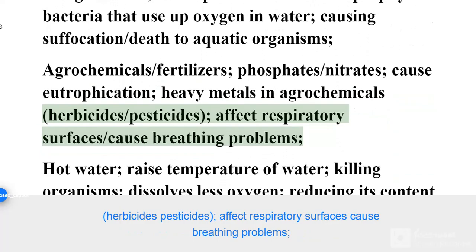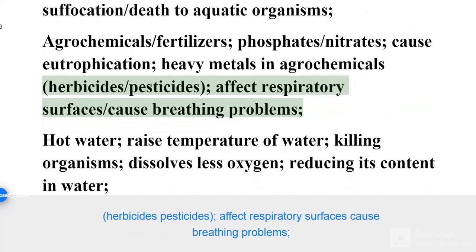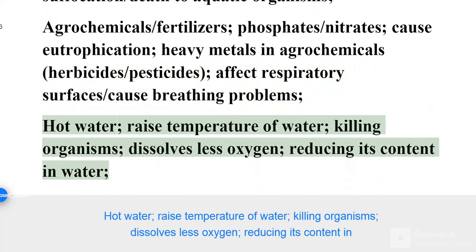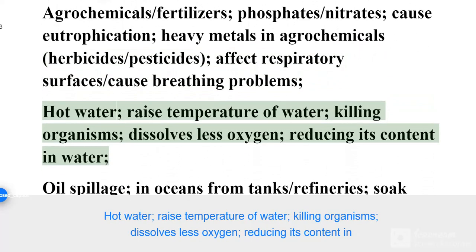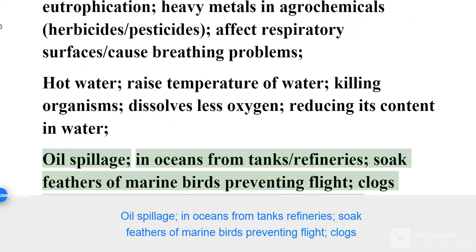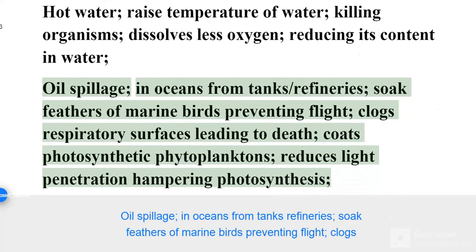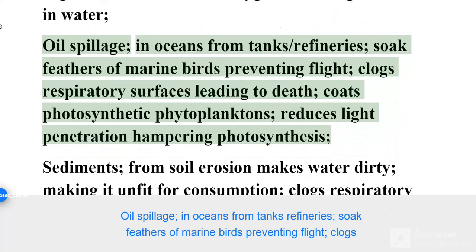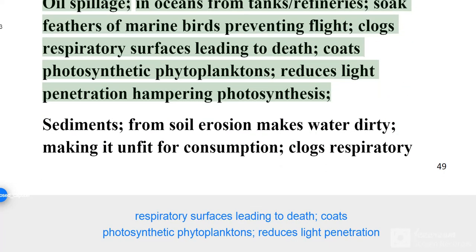Herbicides and pesticides affect respiratory surfaces and cause breathing problems. Hot water raises the temperature of water, killing organisms, and dissolves less oxygen, reducing its content in water. Oil spillage in oceans from tankers and refineries soaks feathers of marine birds preventing flight, and clogs respiratory surfaces leading to death.